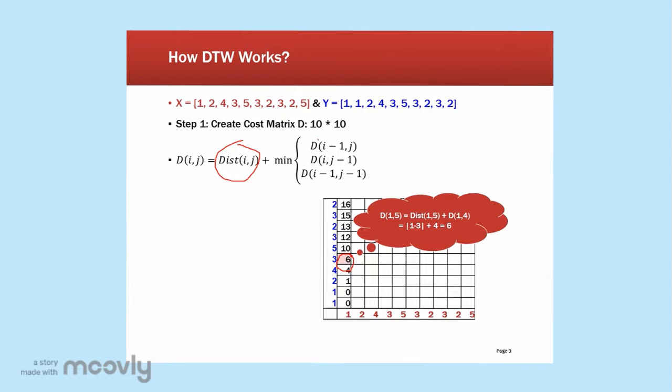And then we find the minimum of these 3 squares. Since this 6 doesn't have anything on the left, so the only square that we are considering is this 4. So we add up the 2 and the number 4 and then we get 6. So we fill in 6.